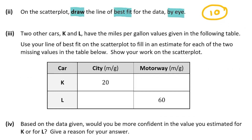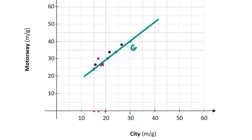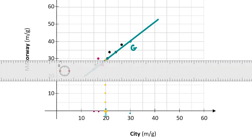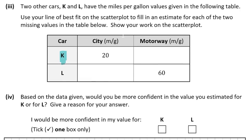We're now told two other cars K and L have miles per gallon values with some missing entries. We're asked to use our line of best fit to estimate the missing values. For car K, the city consumption is 20 miles per gallon. Starting at 20 on the city axis and following the grid line up to the line of best fit, then going straight across, it arrives just underneath 30 — so approximately 29 miles per gallon on the motorway.